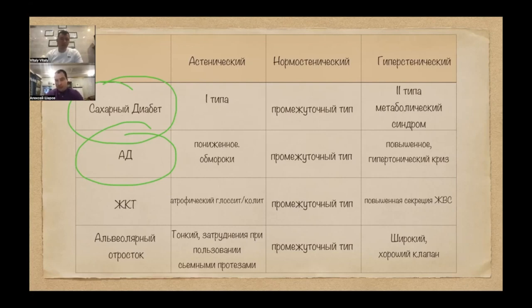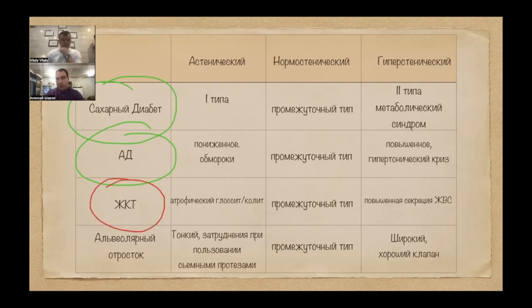GI tract — towards atrophy. Atrophic gastritis. And in hypersthenics, increased secretion of glands. How do you feel about that? More yes or more no? I honestly would not take it upon myself to reason that way, because alimentary cleaning factors can influence here as well.